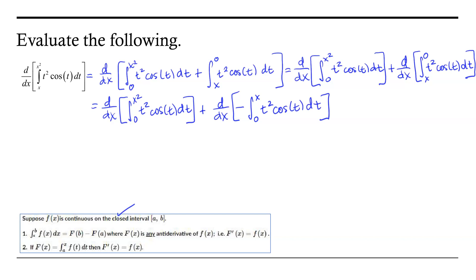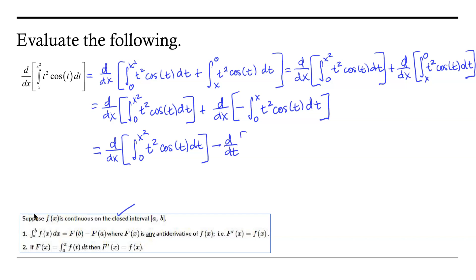To be a little clearer, I'll pull that negative from the second integral out and turn the addition into subtraction. This gives us the derivative with respect to x of the integral from 0 to x squared of t squared cosine of t dt, minus the derivative with respect to x of the integral from 0 to x of t squared cosine of t dt. At this point, both functions we're differentiating are of the appropriate structure.